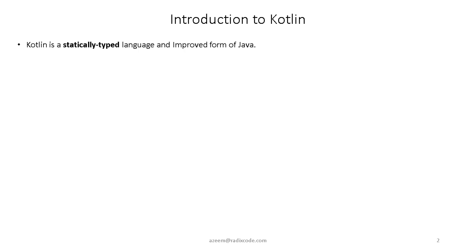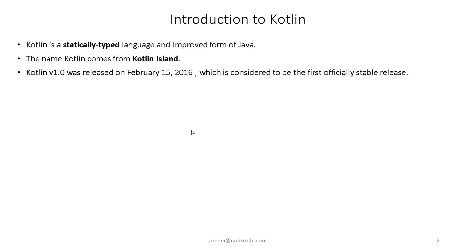Now let's talk about some history of Kotlin. The name Kotlin comes from Kotlin Island, just like the name Java comes from an island called Java in Indonesia. The first stable release of Kotlin was released in 2016, and as of the recording of this video, the current stable release is version 1.1.2, which was released in April 2017.